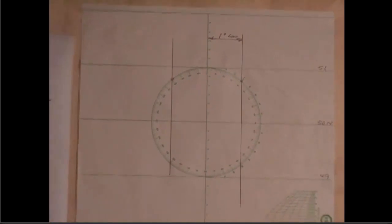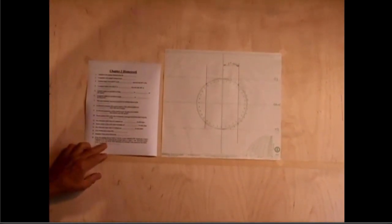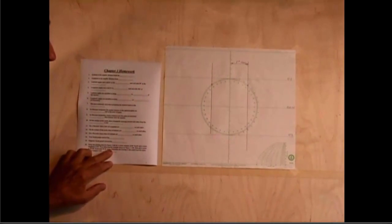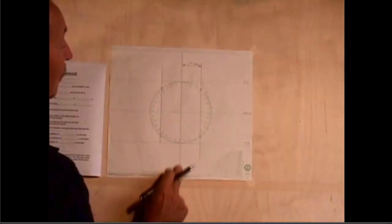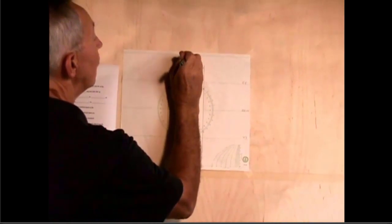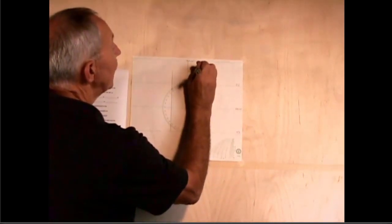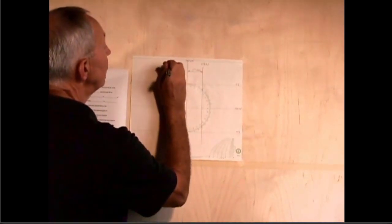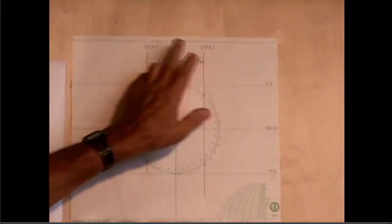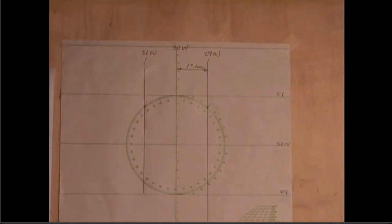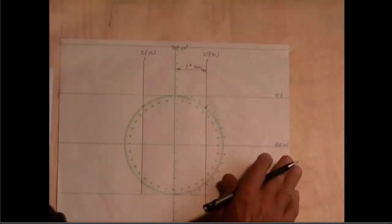Now then the question goes on and it says plot a point at 50 degrees 40 minutes north and 30 degrees 45 minutes west. Okay, so let me call this center longitude 30 degrees west. That makes this one 29 west and it makes this one 31 west, because westerly longitudes increase as you go left: 29, 30, 31. Now it says plot a point at 50 degrees 40 minutes north. So the first thing I'm going to do is do the latitude.